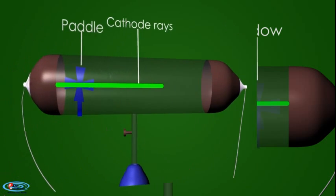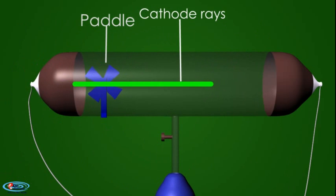2. Produce mechanical effects. On placing a light paddle in the path of cathode rays in a discharge tube, the blades of the paddle will rotate. This shows that cathode rays are a beam of particles having mass and possessing kinetic energy.